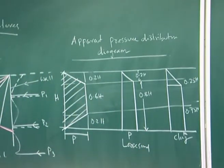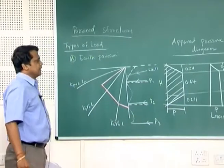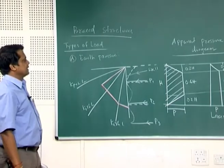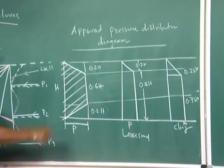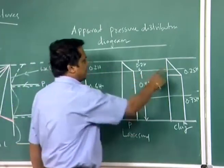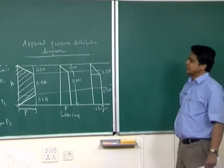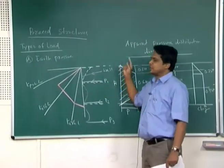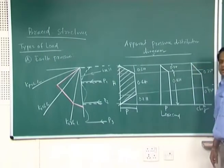If you look at this apparent pressure distribution diagram, because there is no specific pressure distribution diagram for a braced structure, the earth pressure distribution is varying from Kp — passive line — to earth pressure at rest, then earth pressure at rest to active line. Based on this variation, there are apparent pressure distribution diagrams: for sand, varying from 0.2h at the top then 0.6h; for loose sand, 0.2h and 0.8h; for clay, varying from 0.25h to 0.75h, remaining constant. These apparent pressure distribution diagrams are approximate because the pressure is not constant — it varies from Kp to K0 and K0 to Ka line.